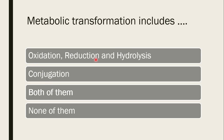Next question on metabolic transformation: it includes phase one and phase two reactions. Phase one reactions include oxidation, reduction, and hydrolysis. Phase two reactions include conjugation, with glucuronide conjugation being the major part. The correct answer is both of them.